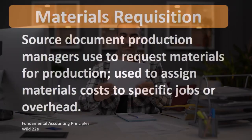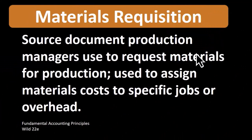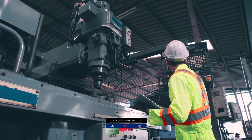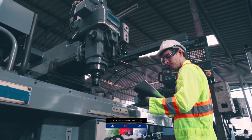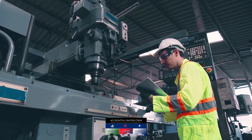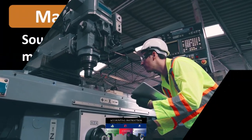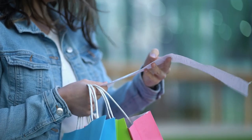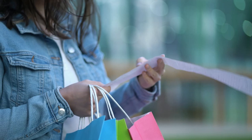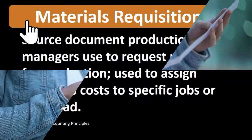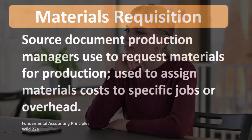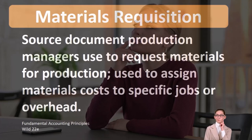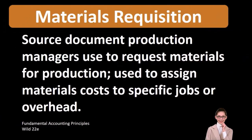When considering the term materials requisition in this context, we're thinking about a job cost system for a manufacturing company — one that produces inventory from raw materials to finished goods. Those finished goods are then sold and moved to cost of goods sold, the expense account.